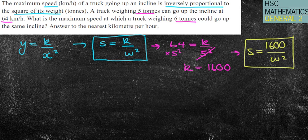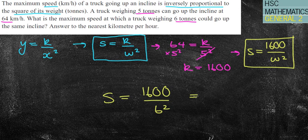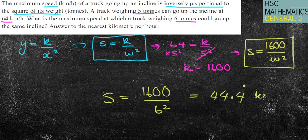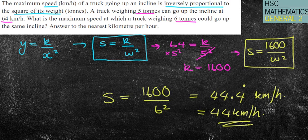I can now use this formula to answer the question. What is the maximum speed when we've got a six-tonne truck? s equals 1600 divided by 6 squared. I'll put that in my calculator and get 44.4 recurring. Remember, this is a speed in kilometres per hour. To the nearest kilometre per hour, it equals 44 kilometres per hour.